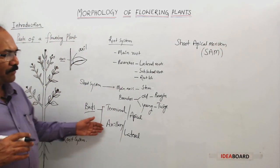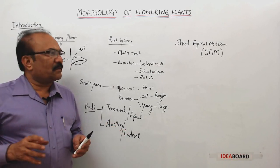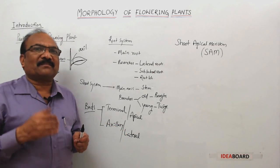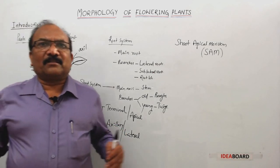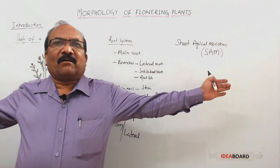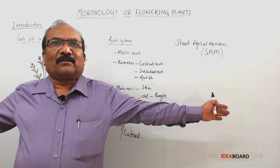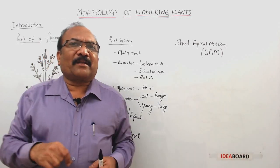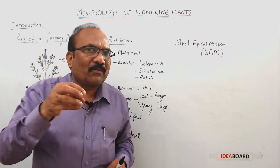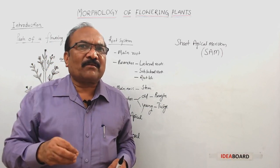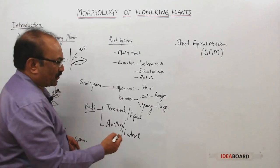The axillary buds help in the formation of branches. These branches are always present on the sides of the stem, and that is why the branches are called lateral branches. They originate from axillary buds, and that is why another name for axillary buds is lateral buds.